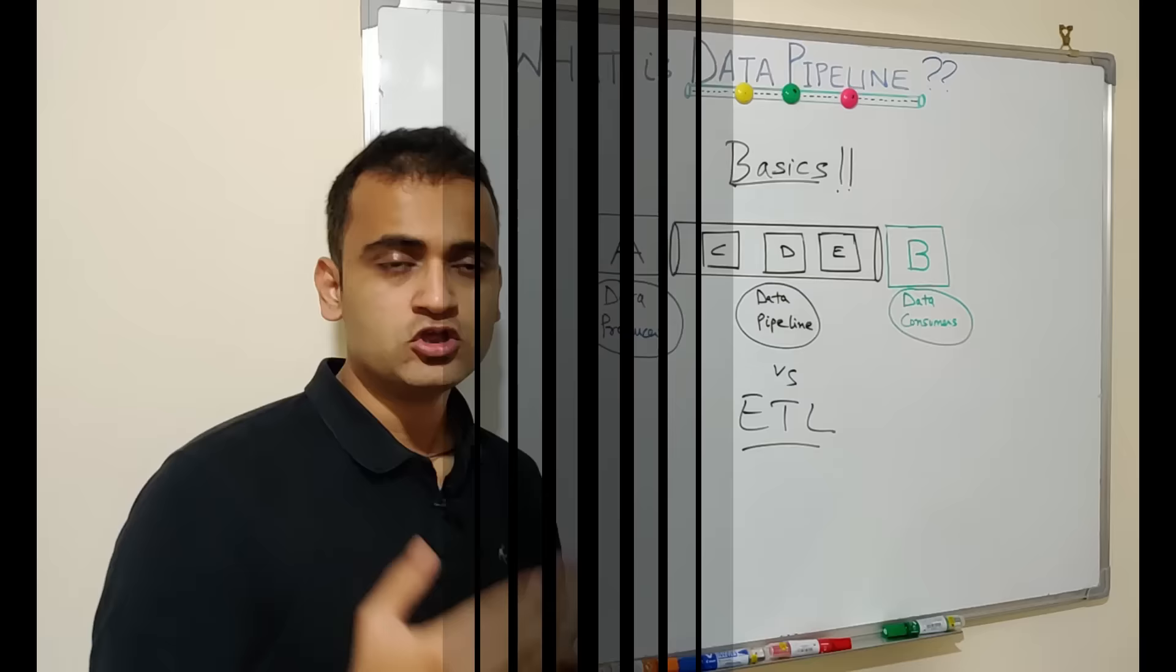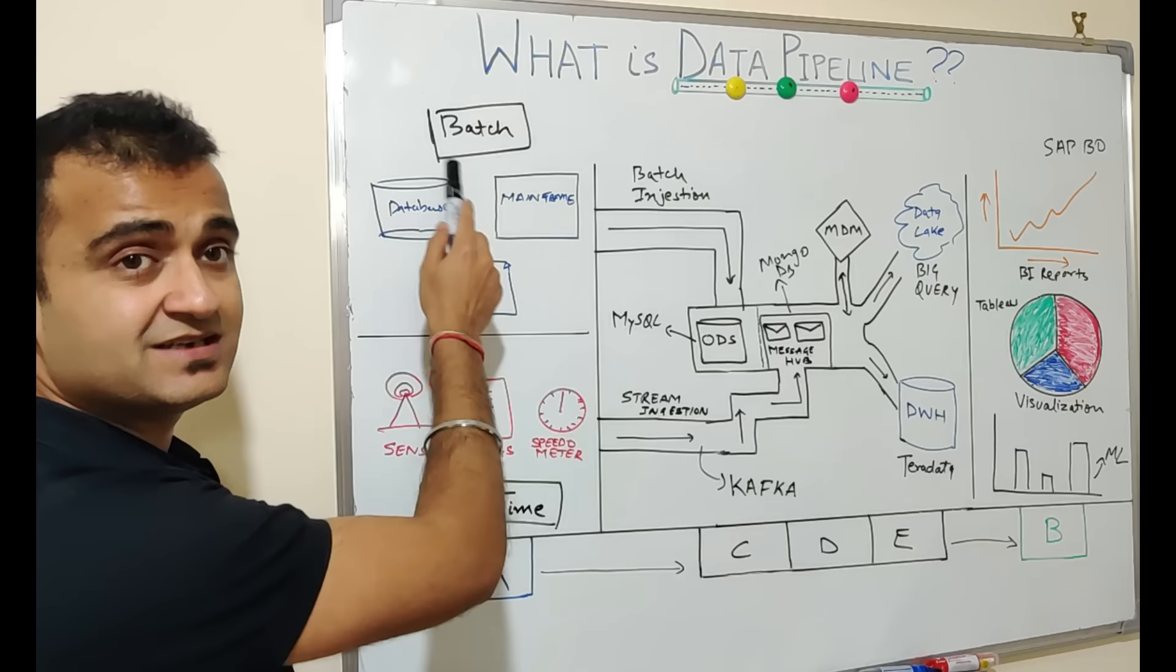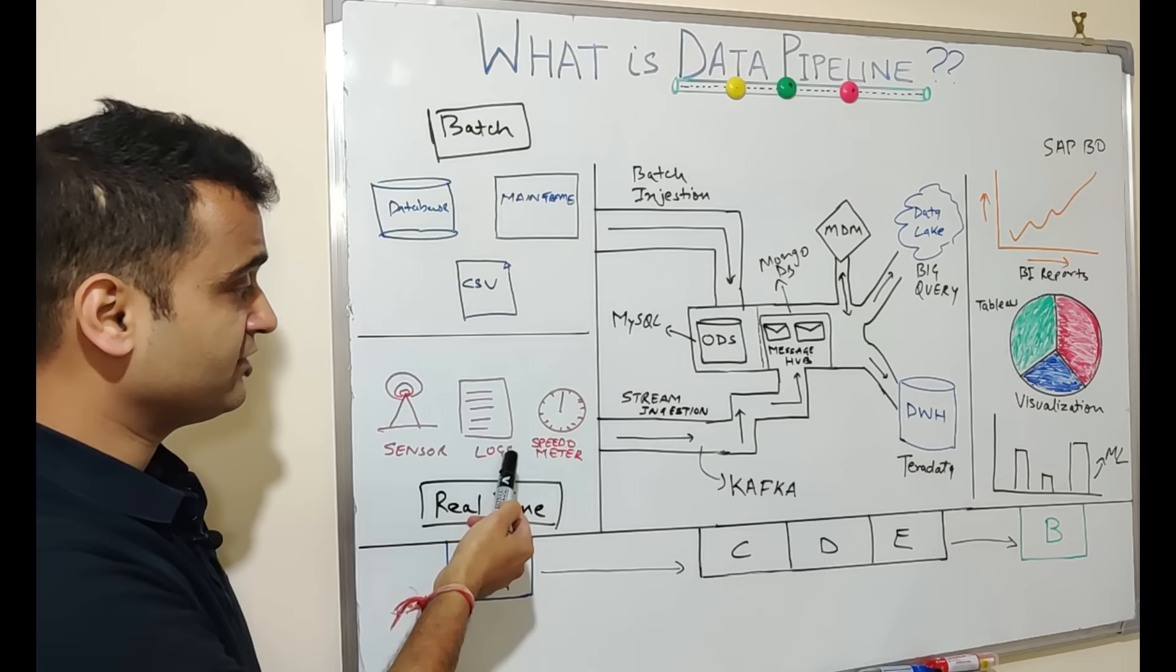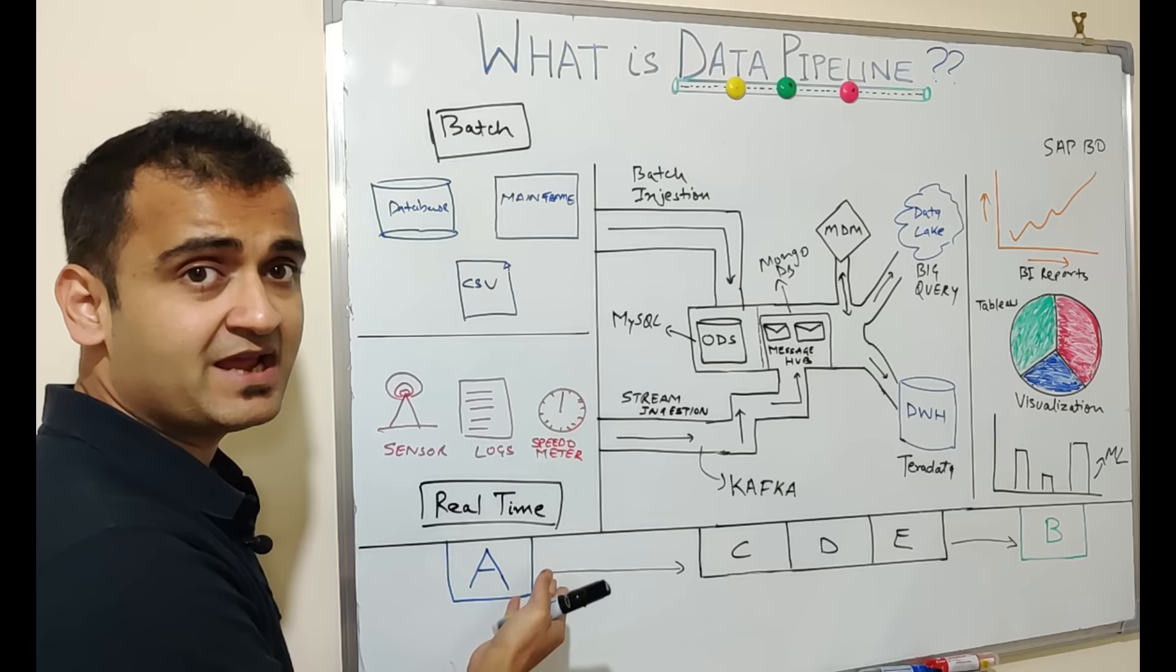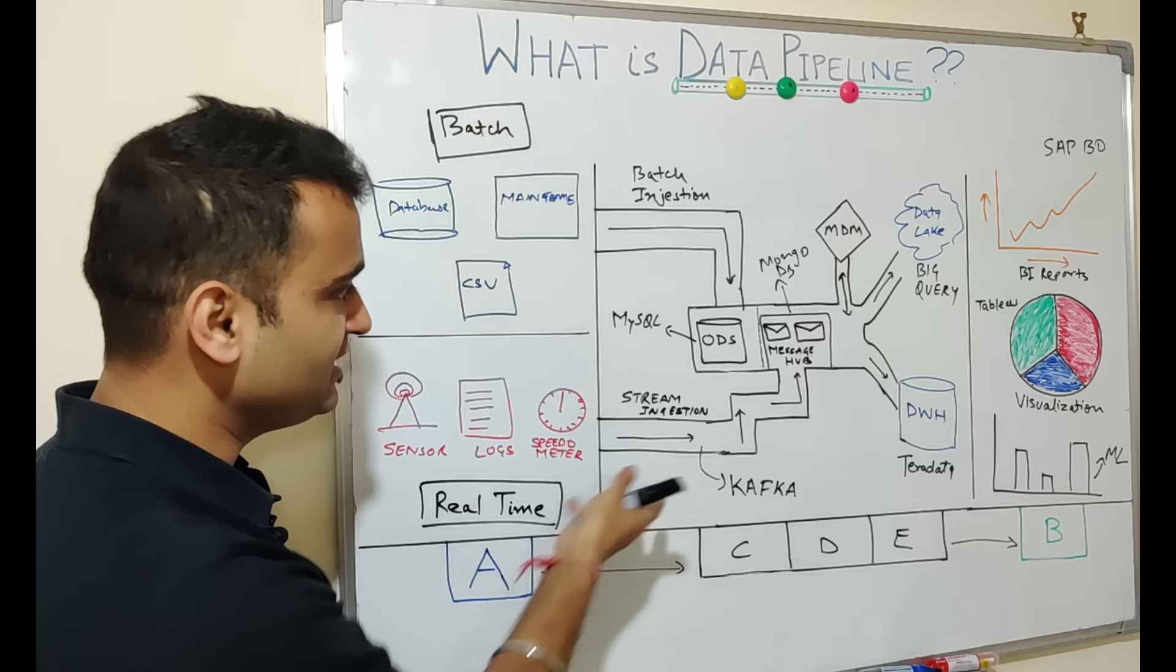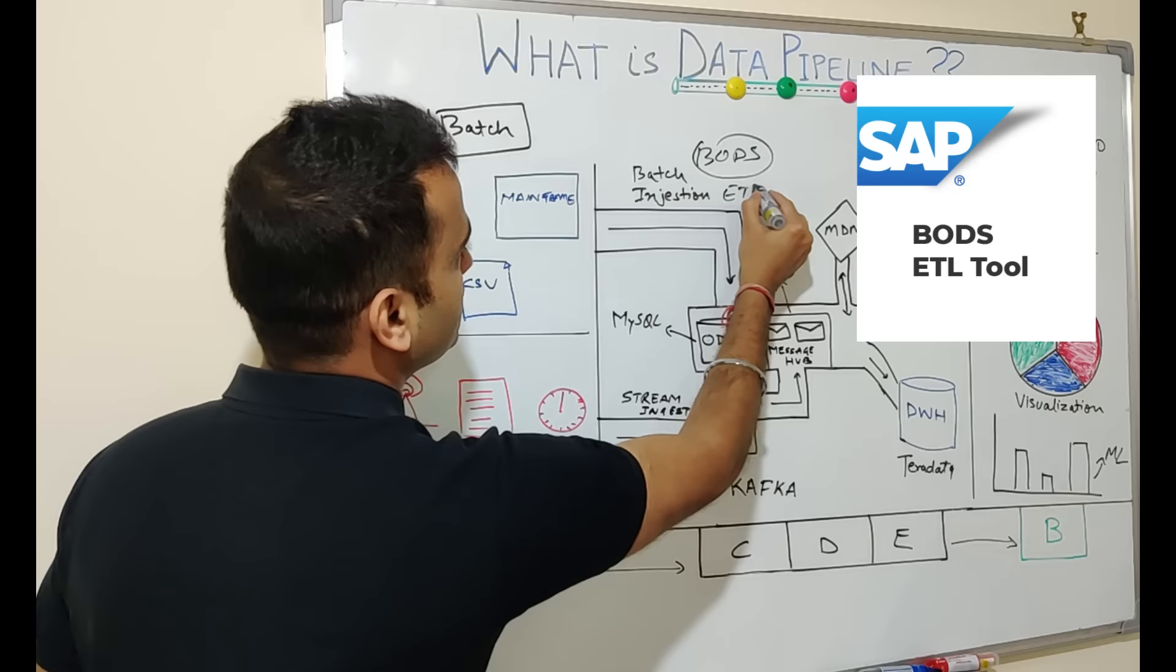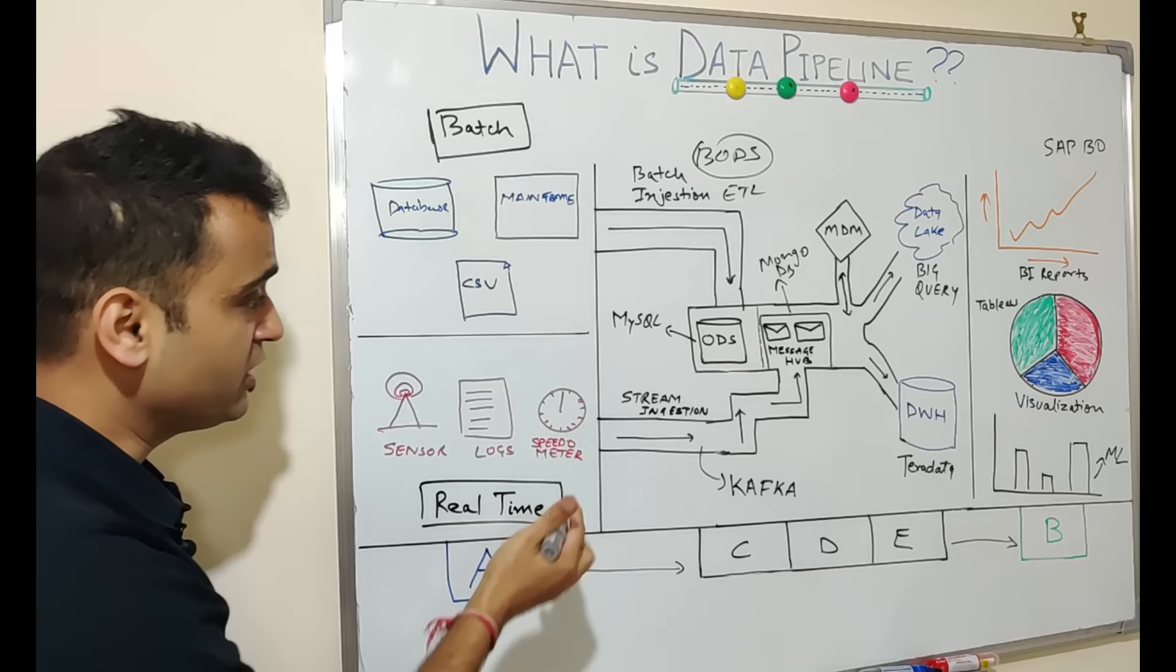Now let's dig deep into the advanced architecture of a data pipeline to get more insights. On the left we have two types of data getting generated: the batch data which is on-premise, and real-time data from your sensors, log devices, and maybe your speedometer. All these are coming in real time through satellites and IoT sensors. You will have batch ingestion for this kind of data and real-time streaming ingestion. For batch you can have a traditional ETL tool like BODS. For real time, the data is coming in messages so you need a streaming message service which Apache Kafka can be.